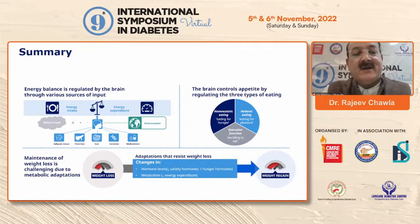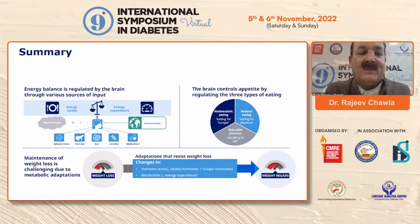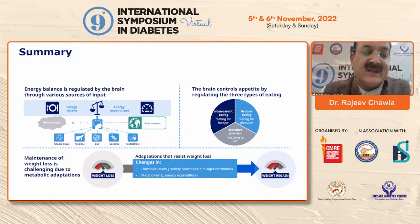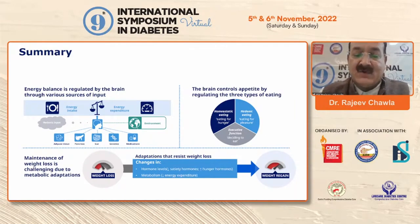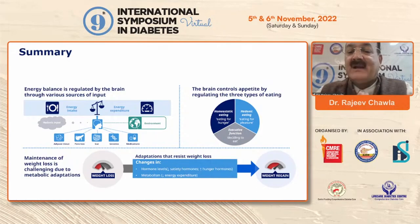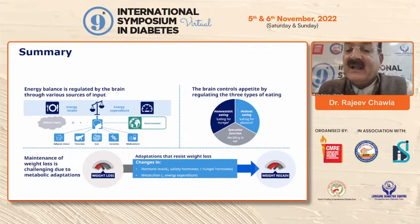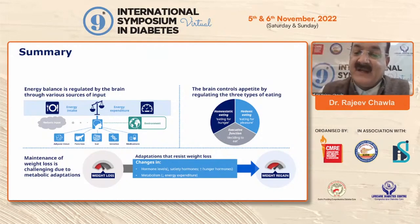To summarize: energy balance is regulated by the brain through various sources of input. There has to be a meticulous balance between energy intake and energy expenditure — the moment there is an imbalance with increased calories or lesser physical activity, you are going to gain weight. Maintenance of weight loss is challenging due to metabolic adaptation — reduction in satiety hormones, increase in hunger hormones, and overall metabolism going down. The brain controls appetite by regulating three types of eating: homeostatic eating (appropriate eating for hunger), hedonic eating (inappropriate eating for pleasure), and the executive function of the brain which decides what to eat and what not to eat.